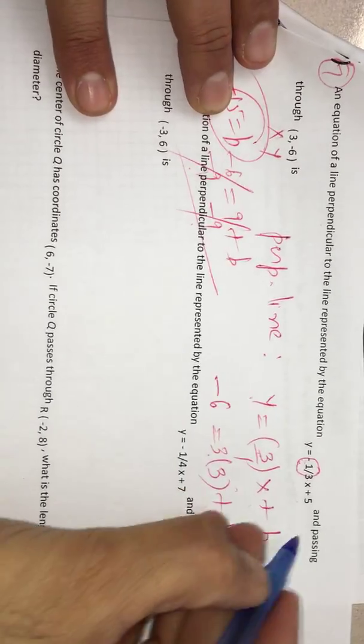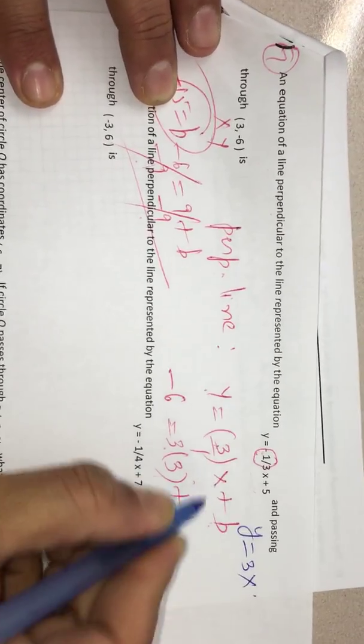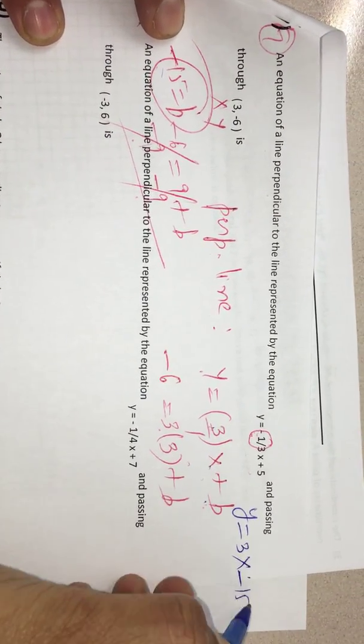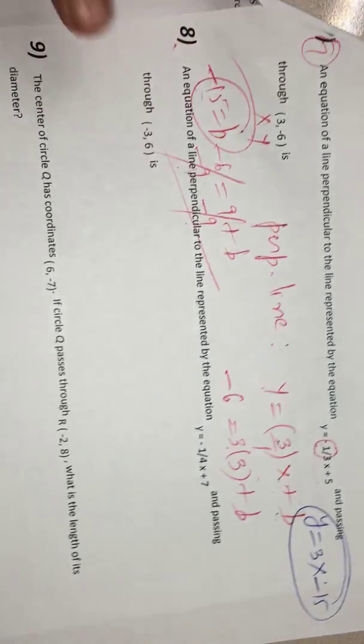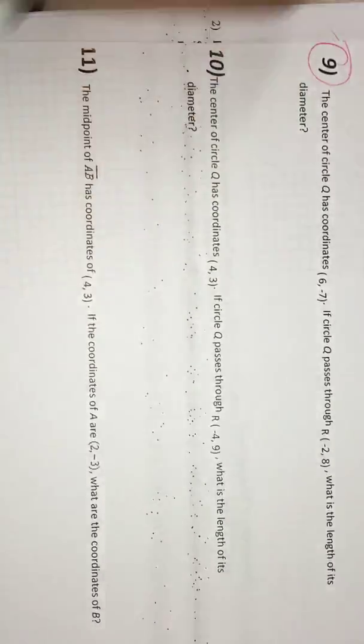Now the equation is Y is equal to 3X plus B, and B I got negative 15. So in this way, you have to find perpendicular line equation. Same way, you try number 8. Let me show number 9.